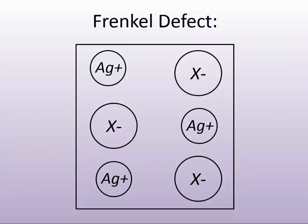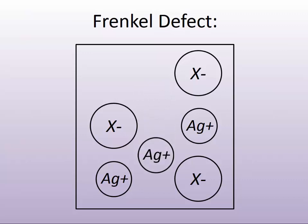A Frenkel defect is actually a very simple defect. It is simply a silver ion that falls out of its position into what is called an interstitial, or in-between, site. Silver is smaller than the halide, so the motion of the silver by this defect is far greater than that of the halide.